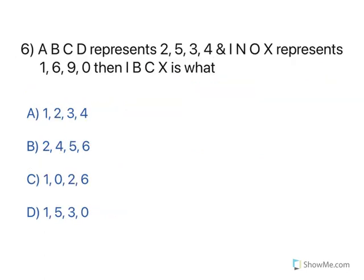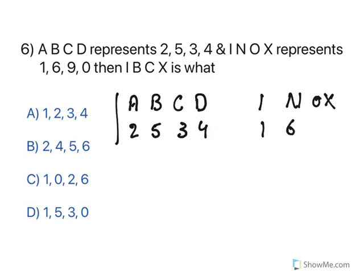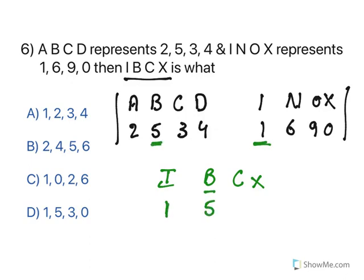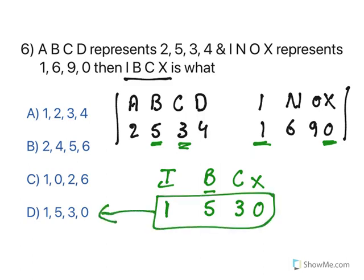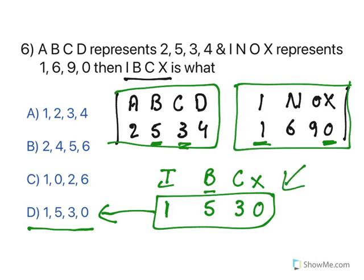Now next one. Alphabets correspond to numericals — write them top and bottom. A, B, C, D corresponds to 2, 5, 3, 4. And I, N, O, X represents 1, 6, 9, 0. Now you need to find what I, B, C, X is. I corresponds to 1, B corresponds to 5, C corresponds to 3, X corresponds to 0. So the answer is 1, 5, 3, 0. This question combines two sets of alphabet-to-number mappings, but it is easier to solve once you write them out.